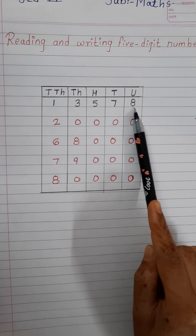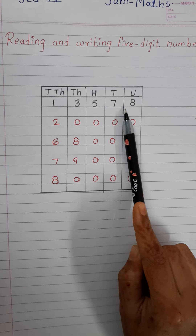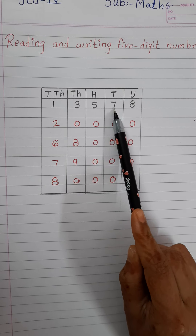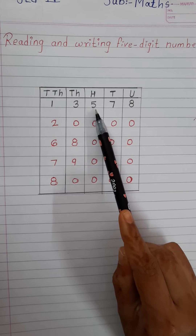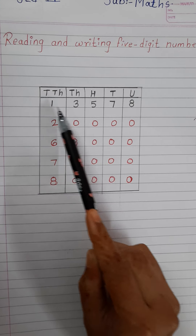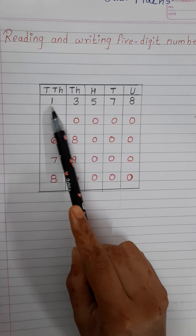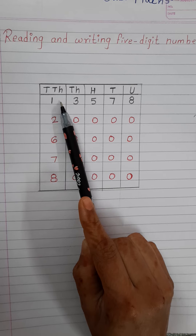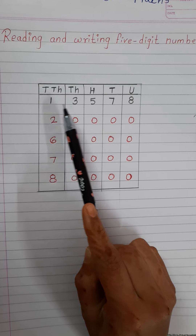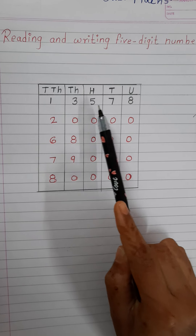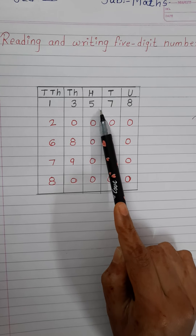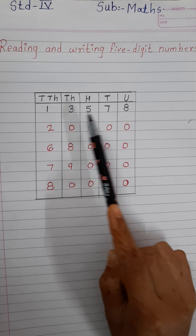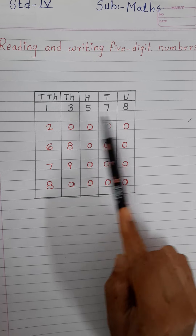Now see, I have written one number here. Count how many digits: 1, 2, 3, 4 and 5. So here there are 5 digits. So how will we read it? This number is 13,578. Understand how to read a 5-digit number.